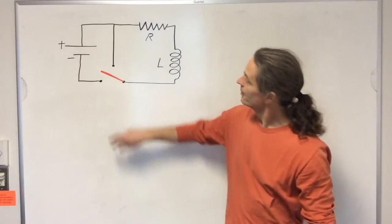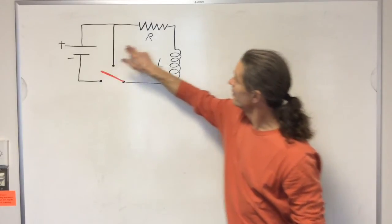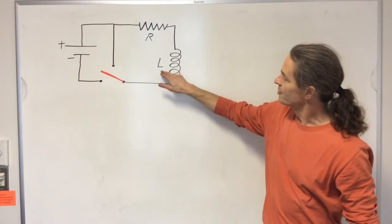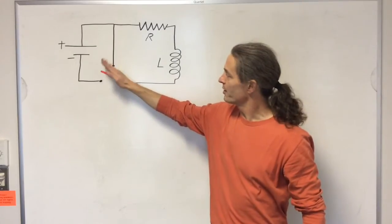Consider the following circuit. Here we have a power supply, a resistor, an inductor, and a movable switch.